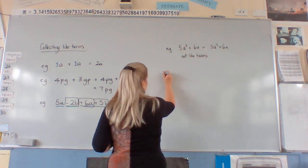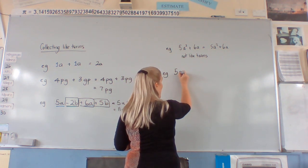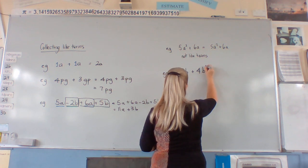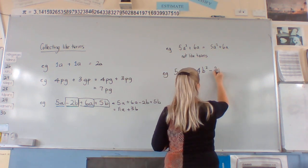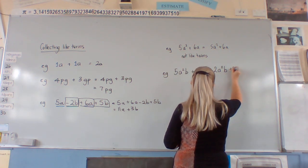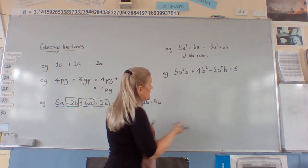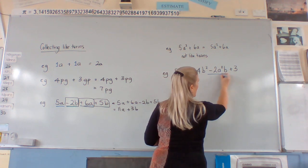So 5A squared B plus 4B squared minus 2A squared B plus 3. When we look for the like terms here, it's just this one and this one.